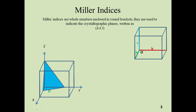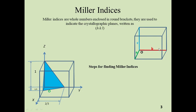Let's suppose this is our crystallographic plane. To write Miller indices for this plane we will follow some steps. The first step is to determine the intercept of this plane. The intercept at the x-axis is 1/3, meaning it intercepts the x-axis at the 1/3 part of lattice constant A. The intercept at the y-axis is 2/3, cutting the y-axis at the 2/3 part of lattice constant B. The intercept at the z-axis is equal to 1, meaning it cuts the z-axis at the complete lattice constant C.